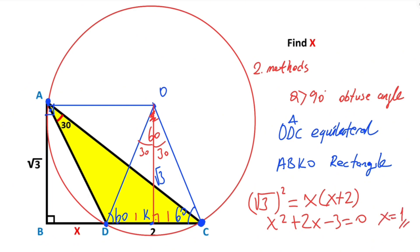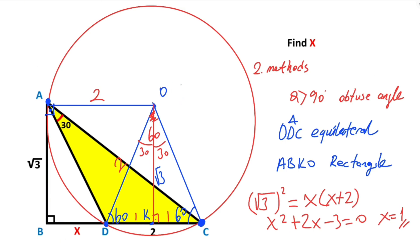Alternatively, notice that if a leg opposite 30 degrees is y, the hypotenuse (opposite 90 degrees) equals 2y. Since this length is also the radius, x + 1 must equal 2 units, giving x = 1. Thanks for watching — if you want more videos like this, please like and subscribe to my channel. Take care and bye bye!